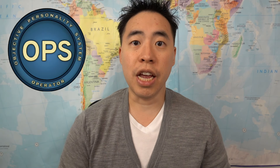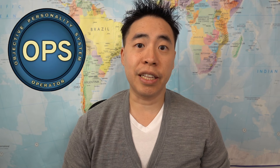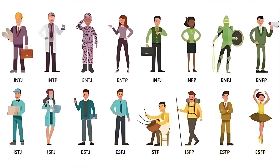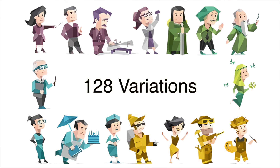Hi there, my name is Kendrick and in this video you're going to learn how the sexual modalities work in the Objective Personality system. In the Objective Personality system you have your original 16 personality types, and each of those 16 personality types actually has 128 variations.